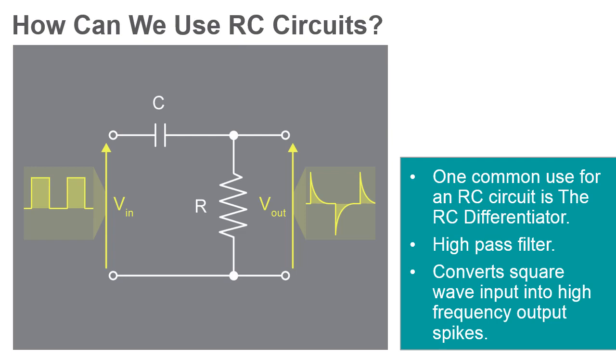Then, as the square wave input charges during each cycle, the output spike changes from a positive value to a negative value.